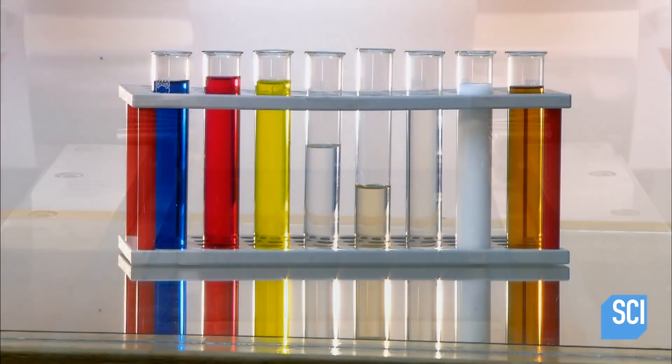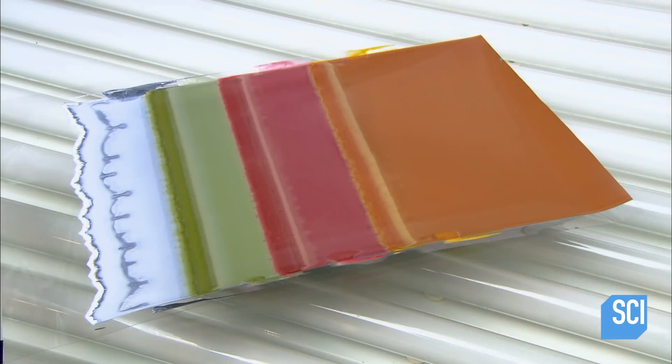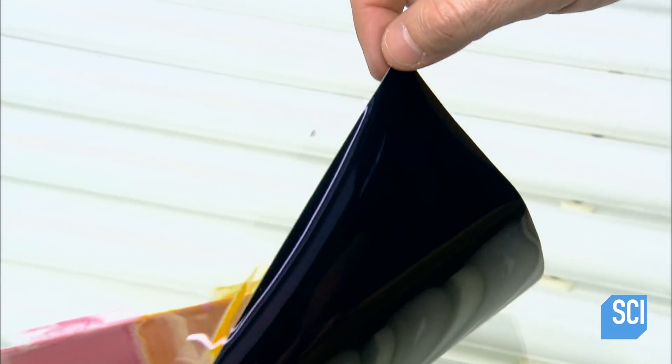Here's a test tube lineup of the liquid components of the negative. The colorful ones are dyes and the white ones are other chemicals. They apply black backing to the negative to block light, again preventing pre-exposure.